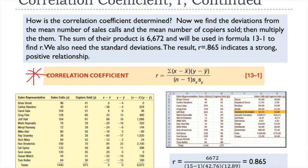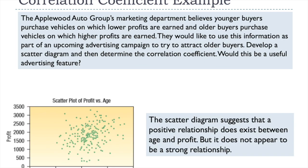An r of 0.865 indicates a very strong positive relationship. However, it's important to note that while the correlation coefficient indicates a strong positive relationship, it does not demonstrate cause and effect. We cannot comprehensively prove that making more calls will lead to more sales — we are only showing that these two variables have a strong positive statistical relationship. That is an important distinction in correlation analysis.